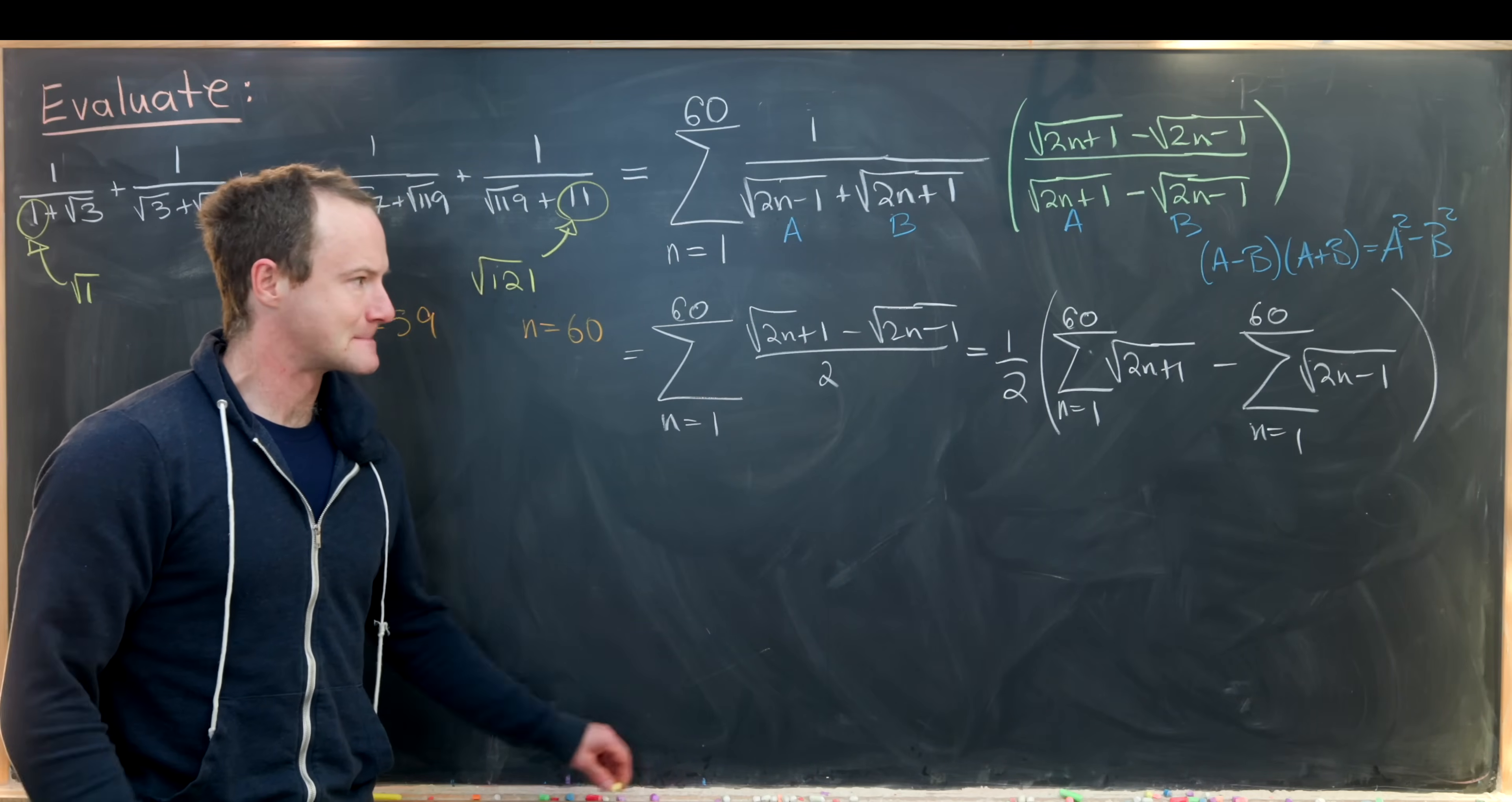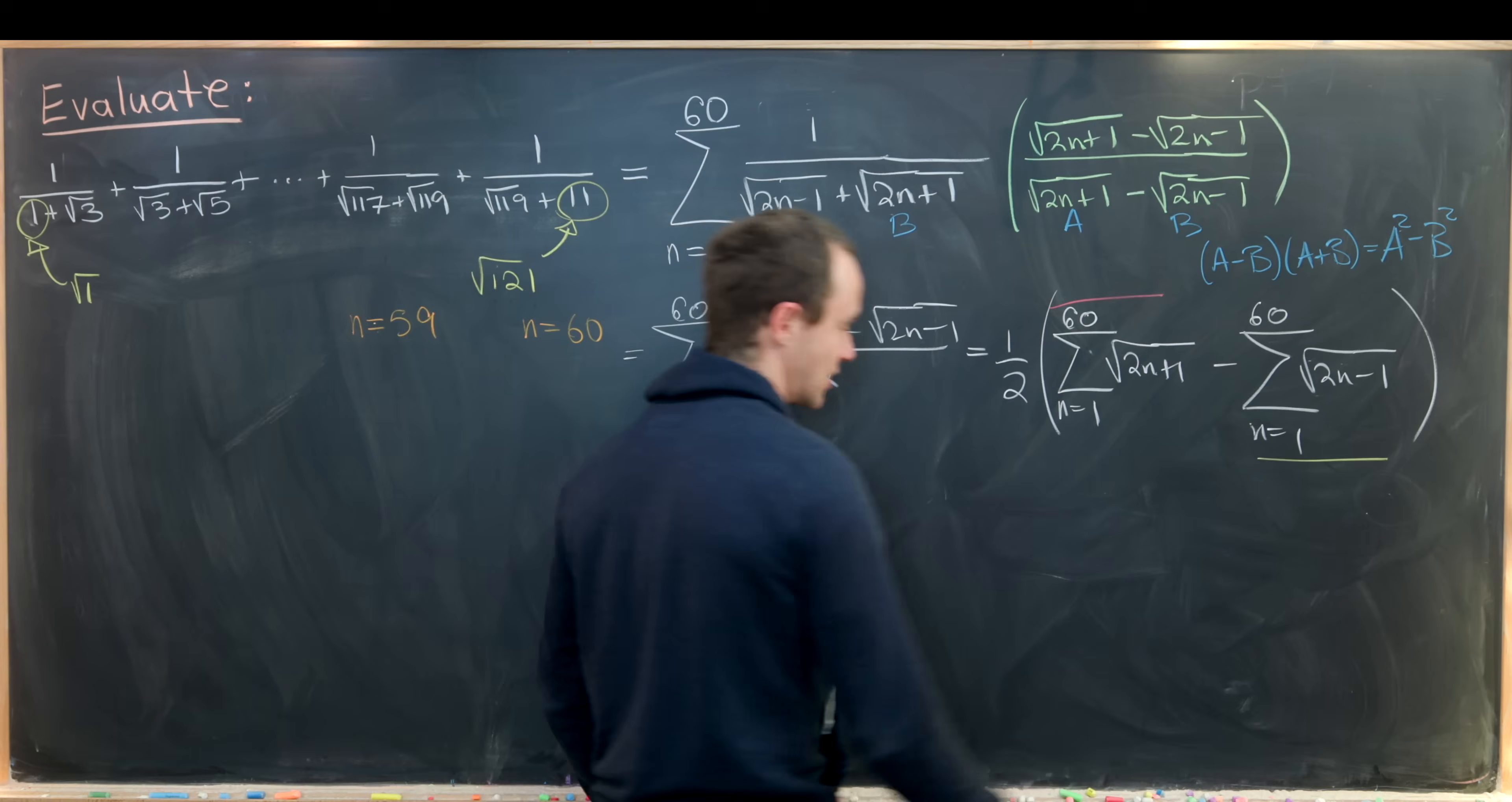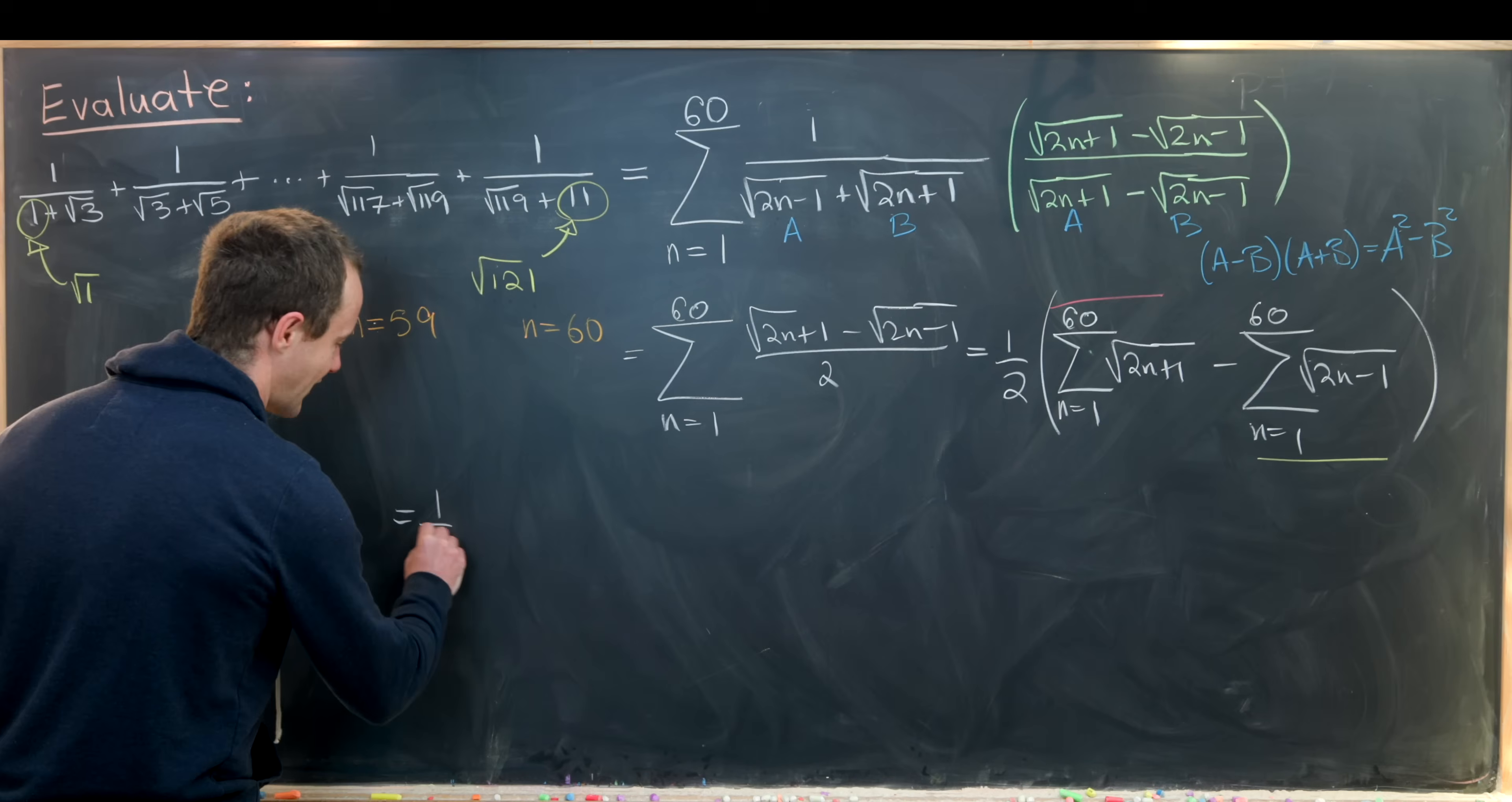Next up, I'm going to take the n = 1 term out of this first sum and the n = 60 term out of this second sum. That'll allow me to re-index these back into each other.